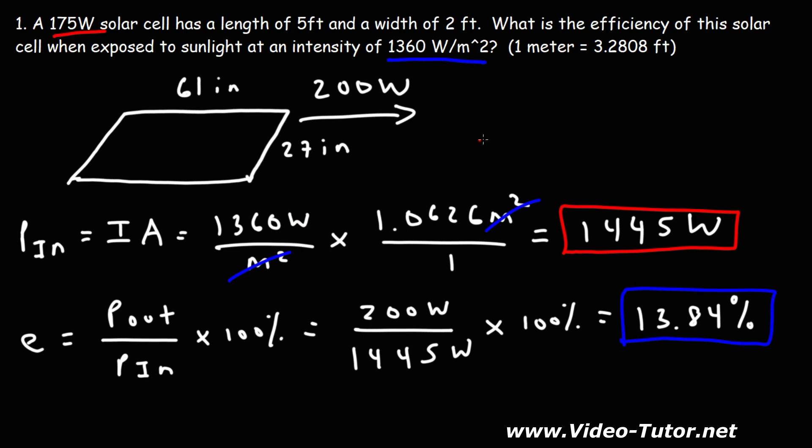The one thing you need to know is the solar intensity of sunlight in your region, because it can vary based on how close or far you are from the equator and whether there are clouds in the sky — all of that affects the average solar intensity shining upon the solar cell.